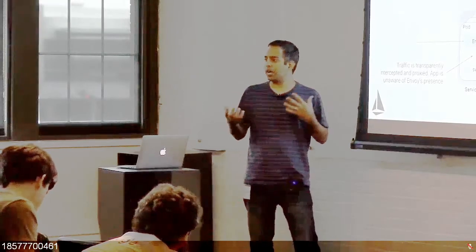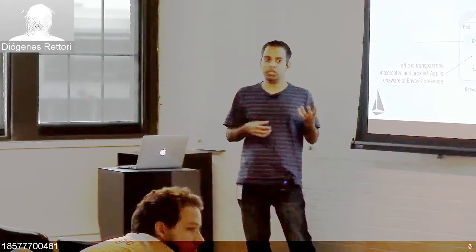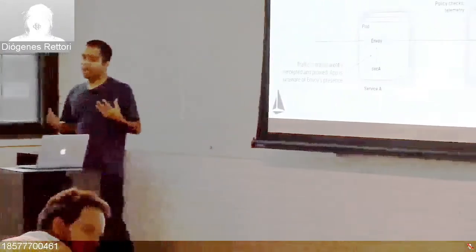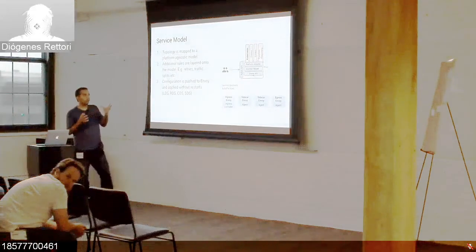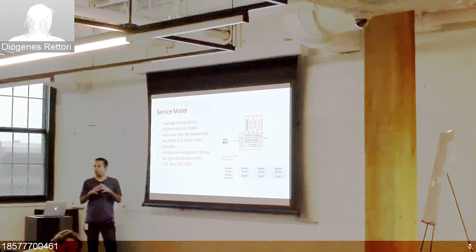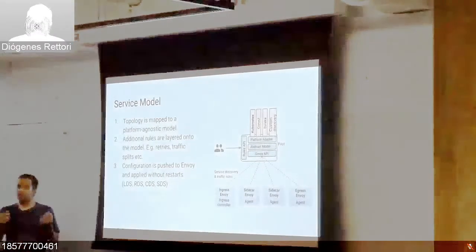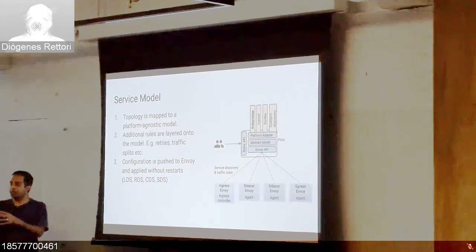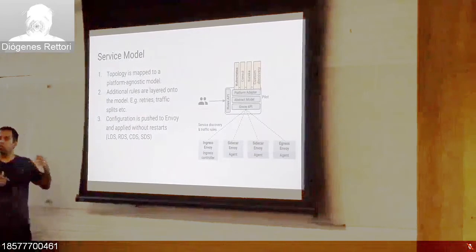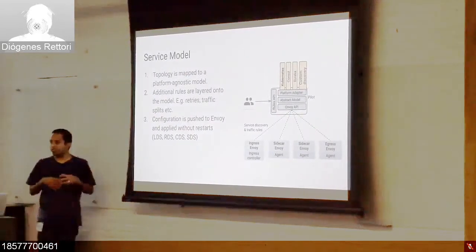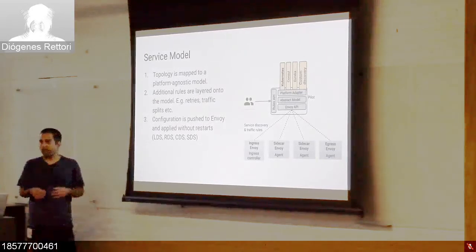In this context, Pilot interacts with the platform - in this case Kubernetes - and we are also working on adding support for Consul and Eureka. It gleans information about what the services are, what pods belong to each service, and what labels are attached to the services. With that information we configure Envoy accordingly to route traffic. Pilot has a plugin model with an abstract service model, and we extract information from the underlying platform, map it to our internal service model, generate routing rules and Envoy configuration, and serve that configuration via a dynamic API.